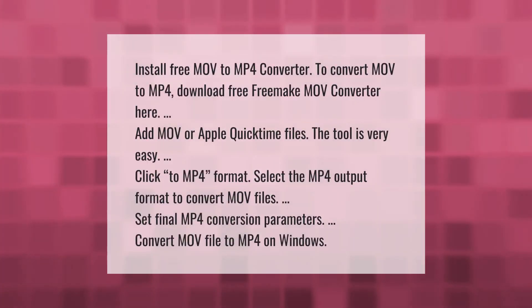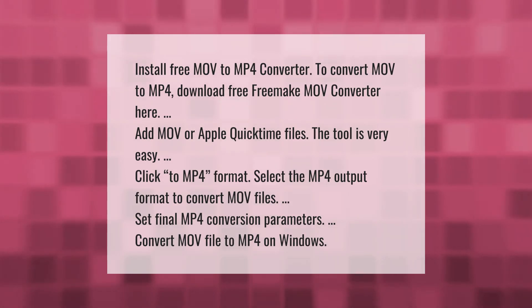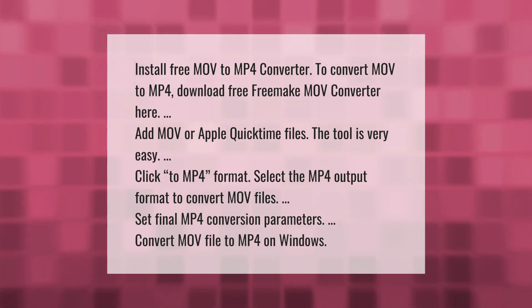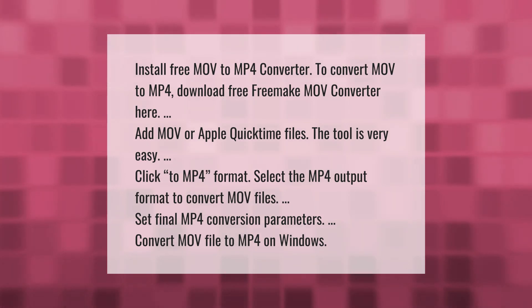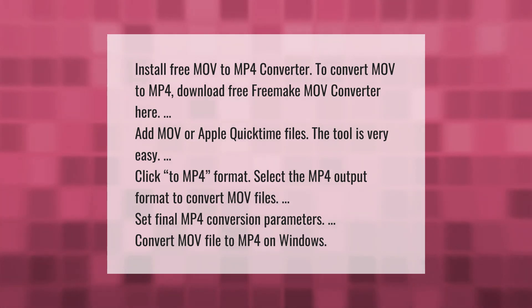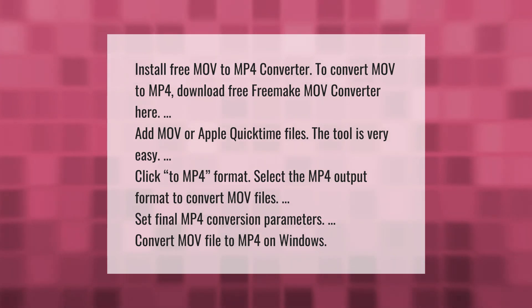Install the free MOV to MP4 converter to convert MOV to MP4 — download the free Freemake MOV converter. Add MOV or Apple QuickTime files; the tool is very easy to use. Click to select MP4 as the output format, set your final MP4 conversion parameters, and convert your MOV file to MP4 on Windows.